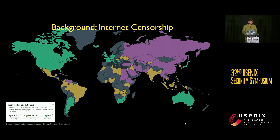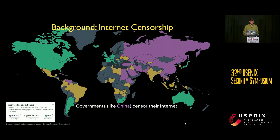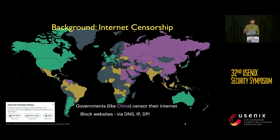As a bit of background — and we've heard this from a couple of previous speakers — there are many countries across the globe that censor their internet. Today we'll be primarily focused on China and the GFW. This censorship can be done in a variety of different ways: DNS injection, IP-based filtering, or deep packet inspection.